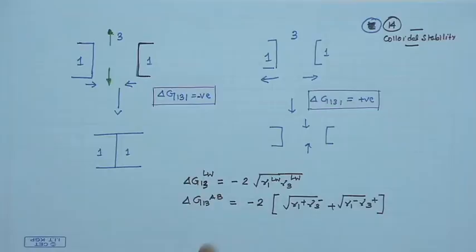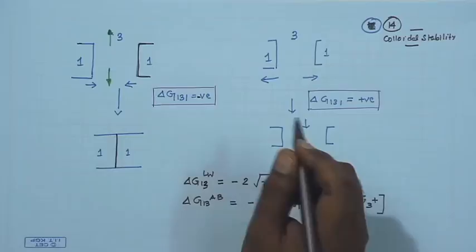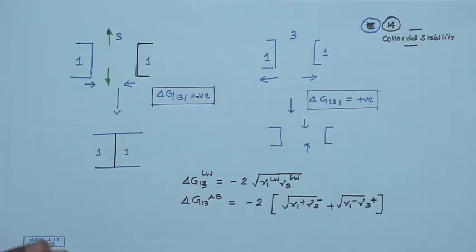You have two colloids of the same material in a liquid 3, and let us say that ΔG₁₃₁ is negative. This means that the colloids are going to adhere — it is not going to be a stable colloid. This is possible either when both the colloids or the liquid are apolar, or even one of them is apolar.